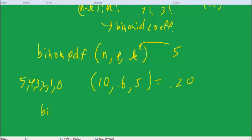Or we can go to a magic function in the calculator called binom CDF. Note that we're now using a C—before we were using a P. Binom CDF stands for cumulative.